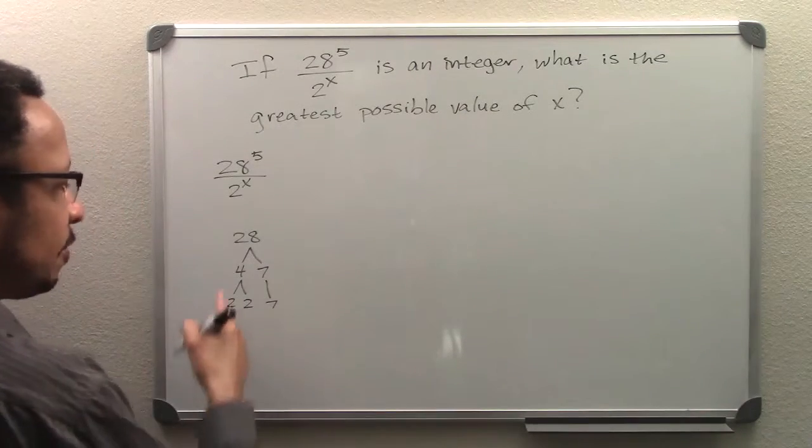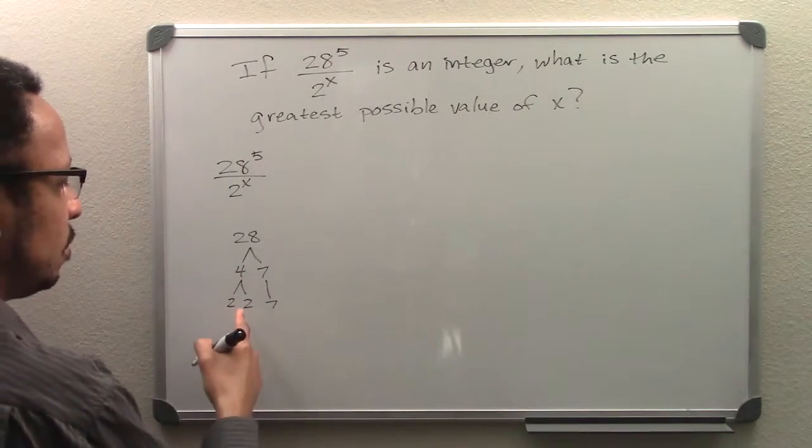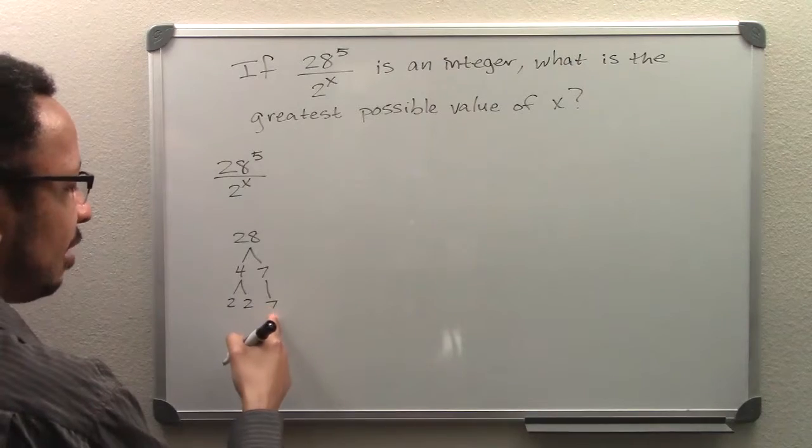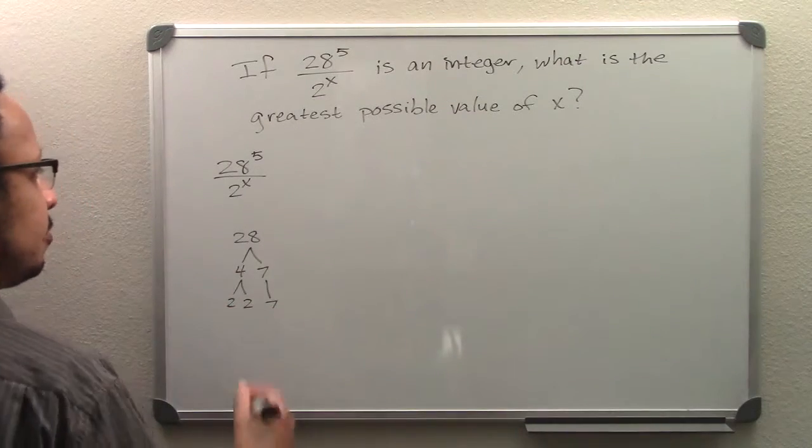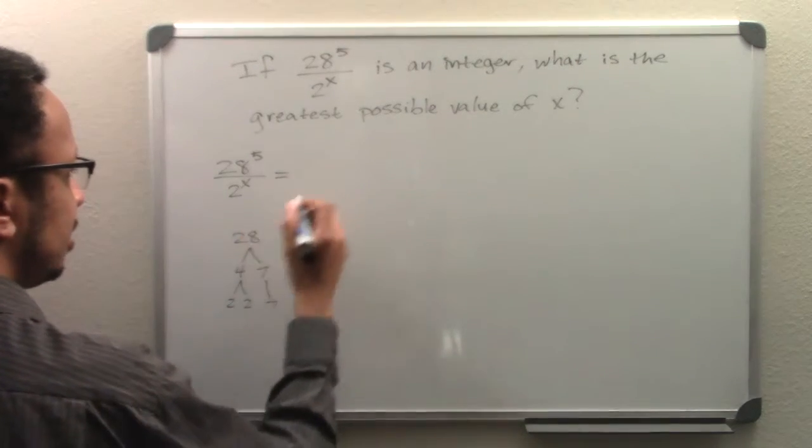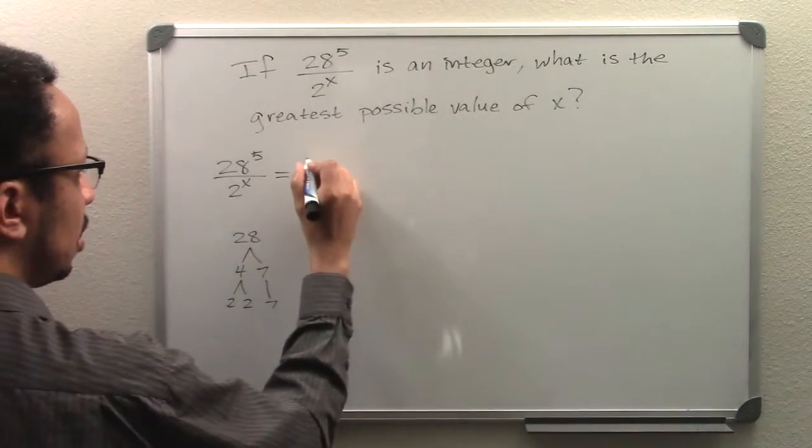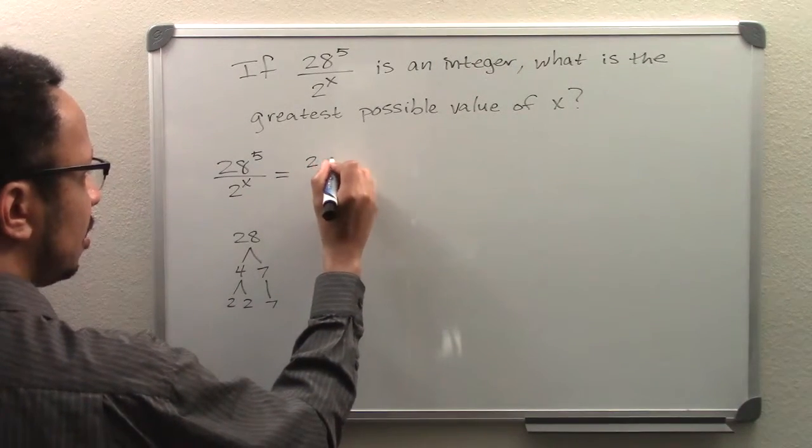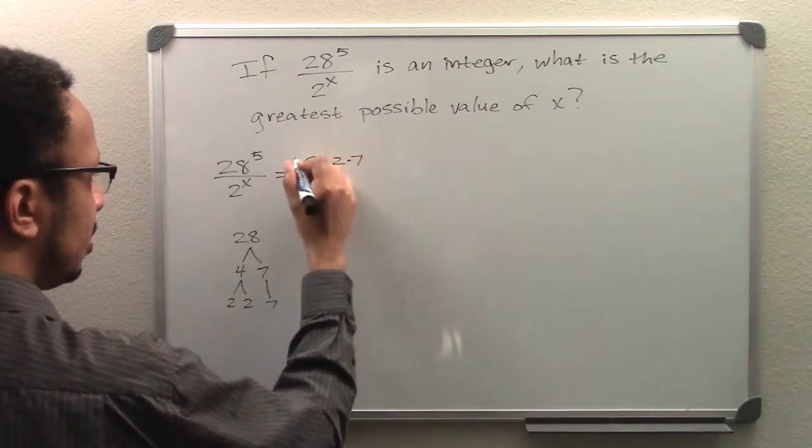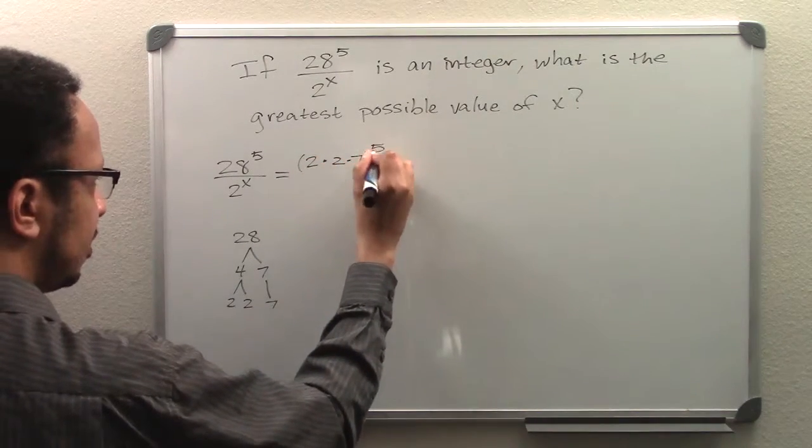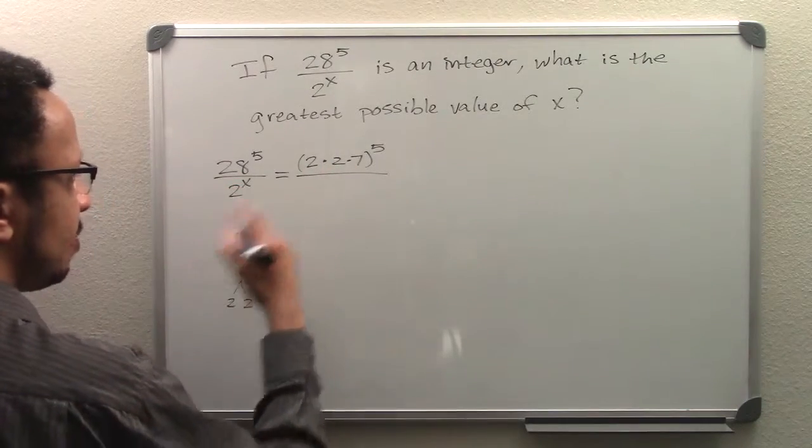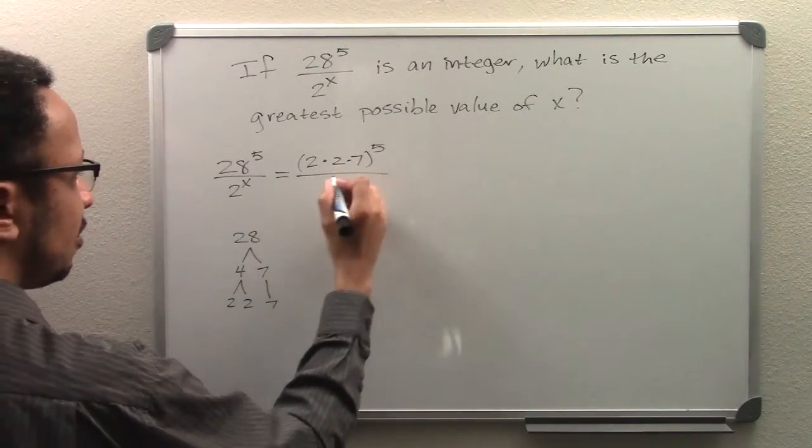Our prime factors for 28 are 2 times 2 times 7, or 2, 2, and 7. I'll include the expansion over here: we have 2 times 2 times 7, and all of that is to the 5th power, because all of that makes up 28. It's just an expanded form of it.